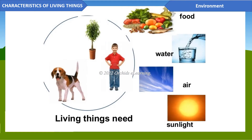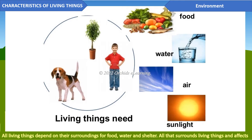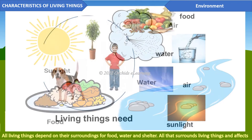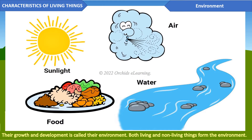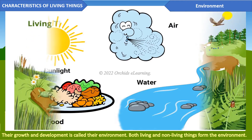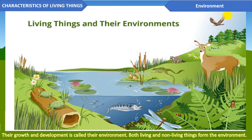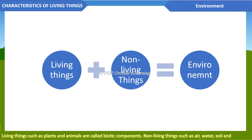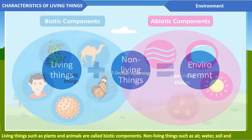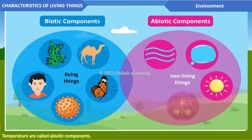Environment: all living things depend on their surroundings for food, water, and shelter. All that surrounds living things and affects their growth and development is called their environment. Both living and non-living things form the environment. Living things such as plants and animals are called biotic components; non-living things such as air, water, soil, and temperature are called abiotic components.